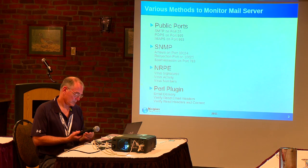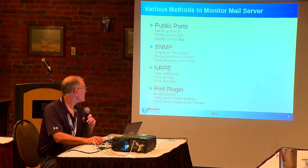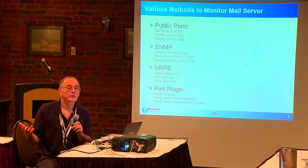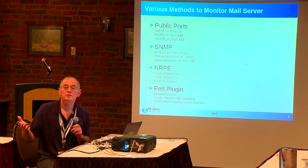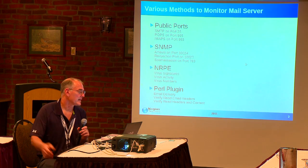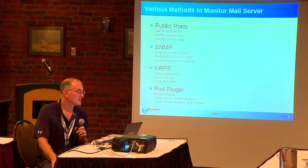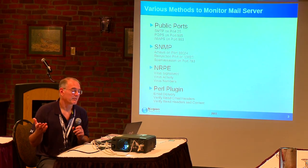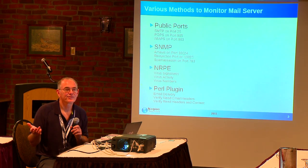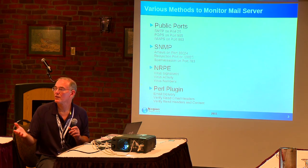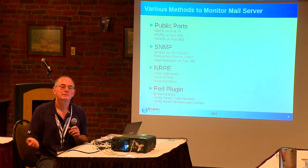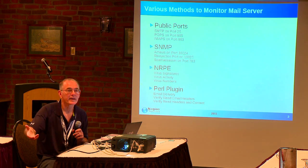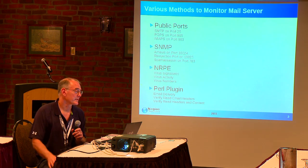We're looking at a couple different things here as examples. Public ports — monitoring public ports on a mail server: port 25, 995 if you've got POP-S, IMAP-S. One of the advantages of public ports is they're easy to monitor, but it doesn't tell you a whole lot. They're up or they're down. You really don't know if you can deliver mail or if the mail can be read, so there's a lot of other things you need to do.